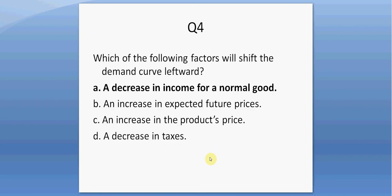Question four. Which of the following factors will shift the demand curve leftward? A — a decrease in income for a normal good. A normal good is something that you'd buy more of as your income rises, or just the opposite, a good that you'd buy less of as your income falls. So a decrease in income would lead to a decrease in demand.